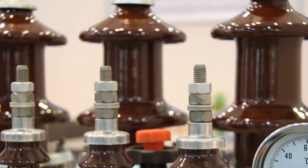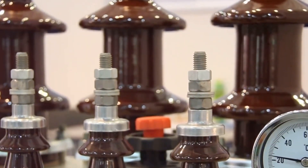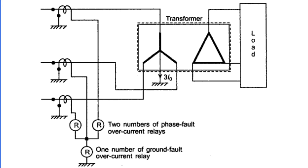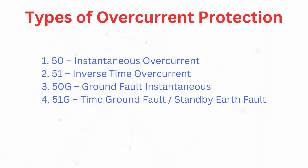Now that we understand the importance of transformer protection, it's time to delve into the different types. First, we have overcurrent and earth fault protection, which acts as a primary or backup protection. This protection kicks into action when the current in any phase crosses the preset maximum value. Its types include instantaneous overcurrent, inverse time overcurrent, ground fault instantaneous, and time ground fault. Each type plays a unique role in guarding against different scenarios of electrical faults, ensuring that any excessive current is detected and dealt with promptly.